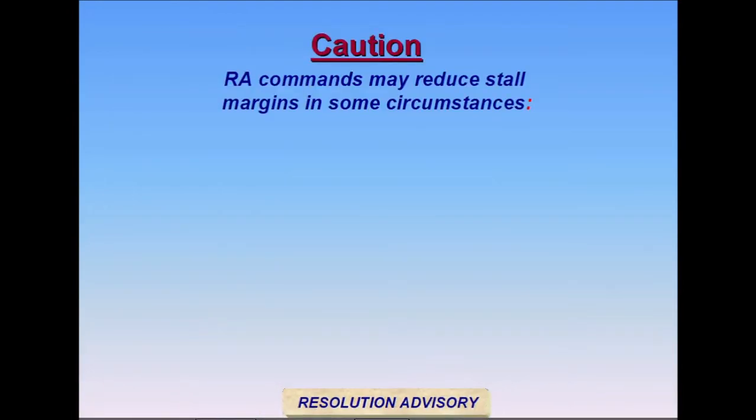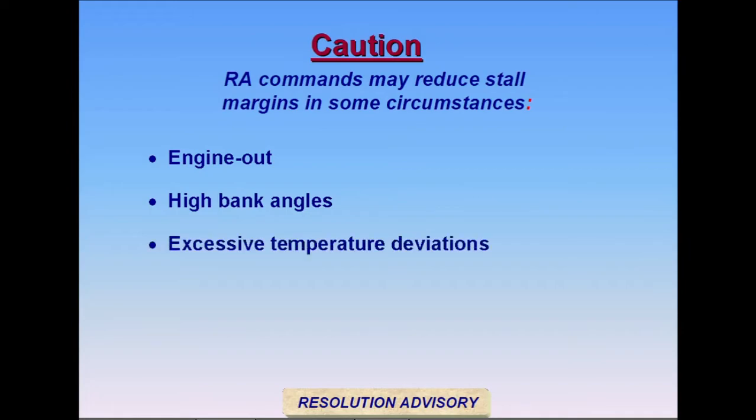The TCAS system may command maneuvers which significantly reduce stall margins in some situations. Be especially cautious when operating in these circumstances. After the loss of an engine, when the bank angle exceeds 15 degrees, when ambient temperatures vary more than plus or minus 50 degrees Fahrenheit, performance may be degraded beyond TCAS predictions. When operating in high drag configurations, with reduced buffet margins, or at speeds below recommended operating speeds.